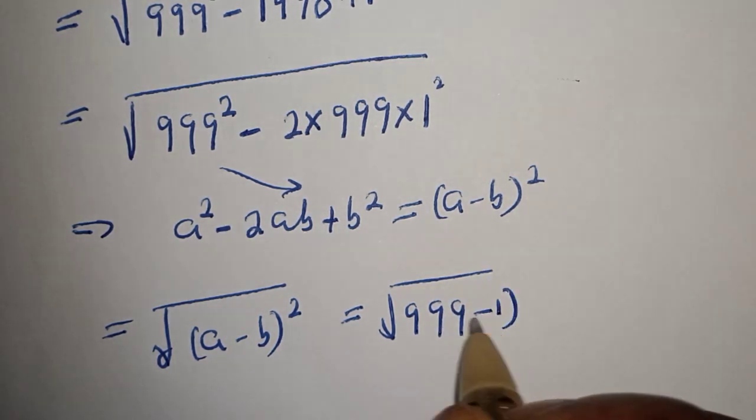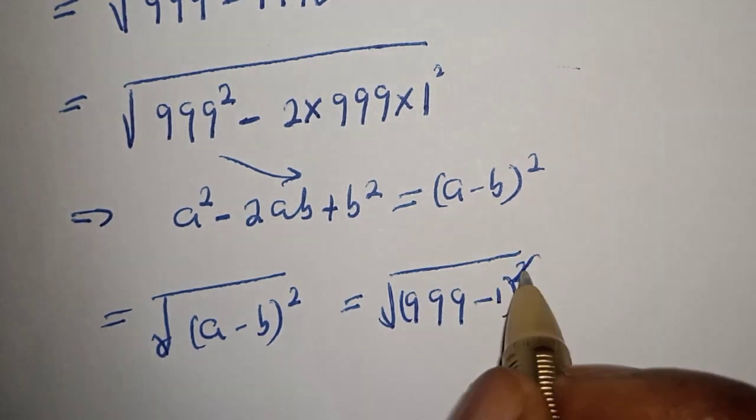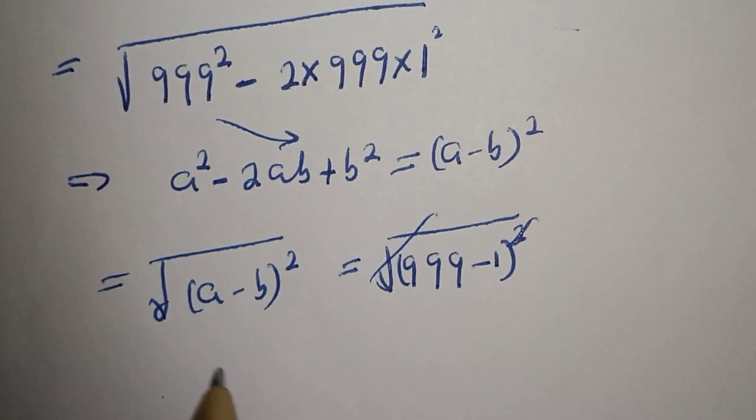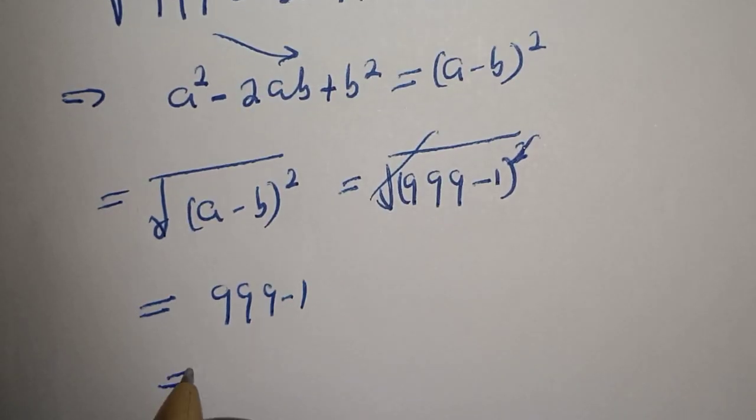The square and square root will cancel. This equals 999 minus 1, which is equal to 998.